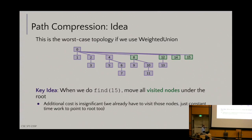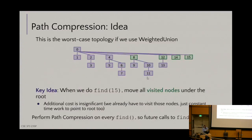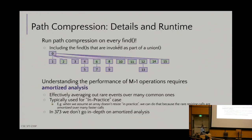After find(15), you essentially end up with all those nodes pointing at the overall root. And you're absolutely right — if I then called find(11), I'd find 11's parent is not root, 10's parent is not root, 8's parent is the root, so I update 10 and 11 to point directly to the root as well. Over time the tree gets flatter and flatter.